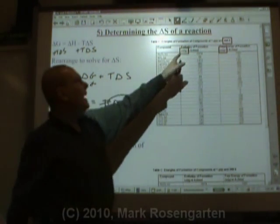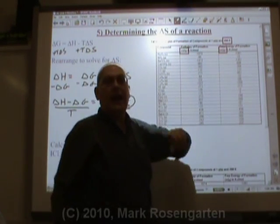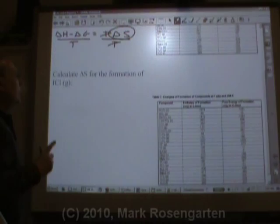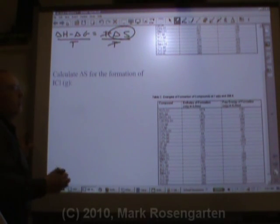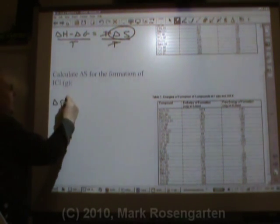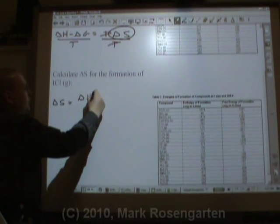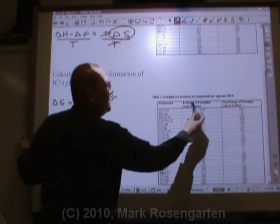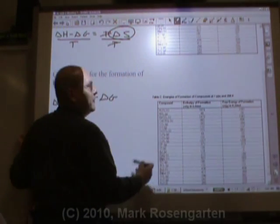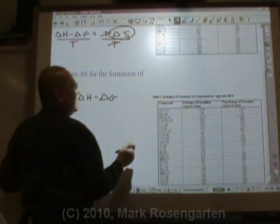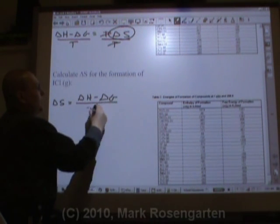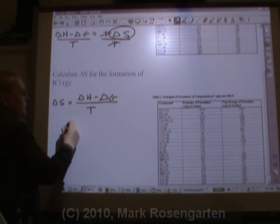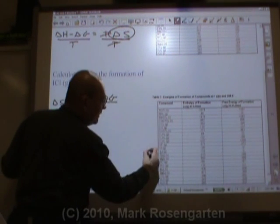Calculate the delta S for the formation of iodine chloride. Delta S equals delta H minus delta G. It's easy to remember because it's in the same order that it is on this reference table. Delta H minus delta G over temperature.